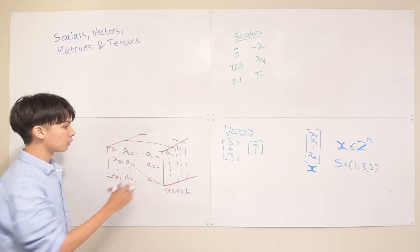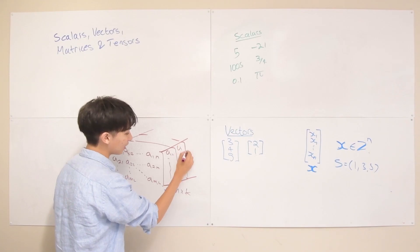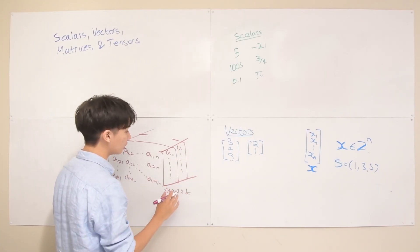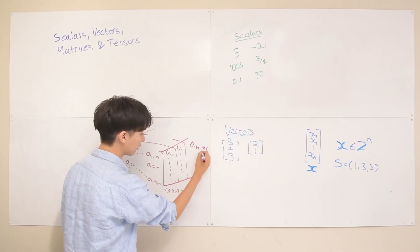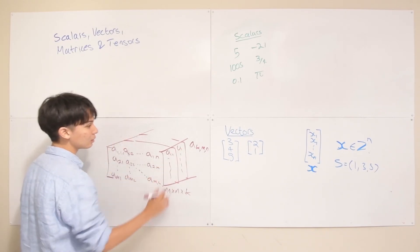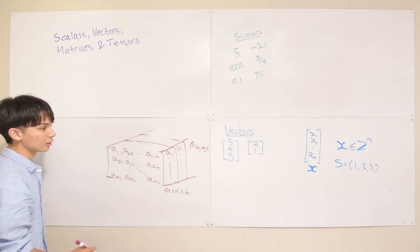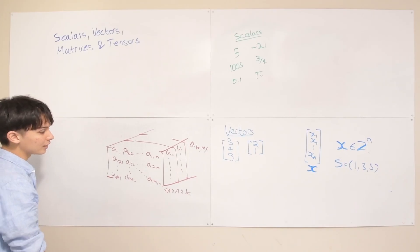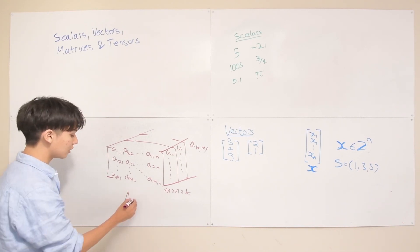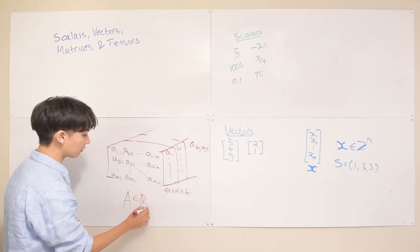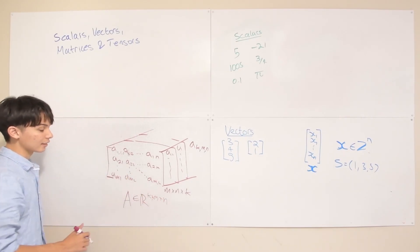Now you need three numbers to index into a tensor. Elements like A₁₁, A₁₂, A₁ₙ from a matrix become A₁₁₁, A₁₁₂ in a tensor — the layer number first, then the row and column, though it varies by author. The last element in the last row, last column, last layer would be Aₖₘₙ, where k is the number of layers, m is the number of rows, and n is the number of columns. Declaration is similar to matrices, using uppercase A ∈ ℝ^{k×m×n}.